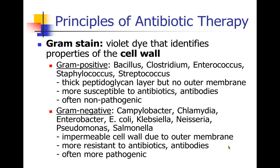Gram-positive bacteria, with that thick peptidoglycan layer, are more susceptible to antibiotics and antibodies. Many gram-positive bacteria are normal bacteria that exist in our bodies — these are bacillus, clostridium, enterococcus, staph, and strep. Gram-negative bacteria, because of their outer membrane, are more resistant to antibiotics and to normal immune response. These are often the bacteria that make us sick — things we see in food poisoning and other infections: campylobacter, chlamydia, Enterobacter, E. coli, Klebsiella, Neisseria, Pseudomonas, and Salmonella.